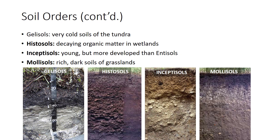There must be a deep, dark A horizon with high base saturation. Mollisols typically form under conditions of moderate to low rainfall. Mollisols are considered the richest of agricultural soils, but lack of rainfall may be limiting for agriculture. Mollisols comprise about 25% of U.S. soils, mostly of the Plain States and some areas of the Pacific Northwest but extending through Iowa into Illinois.